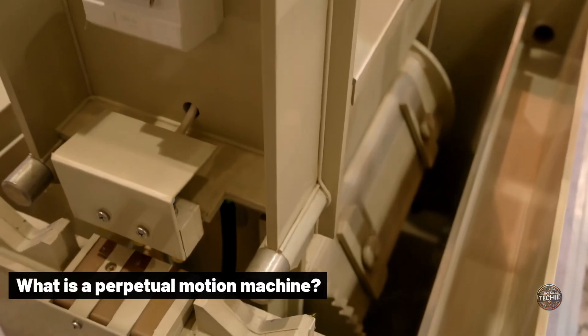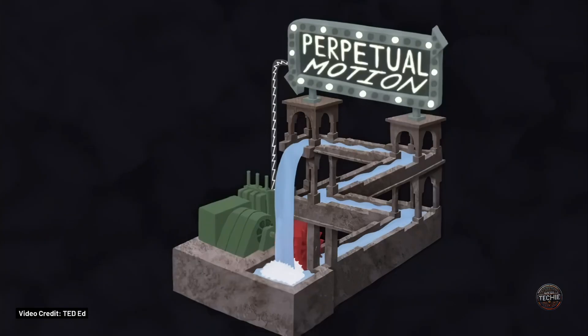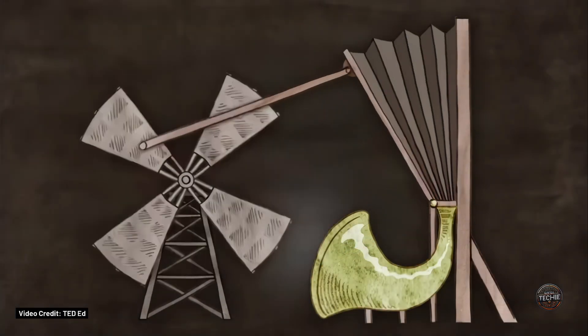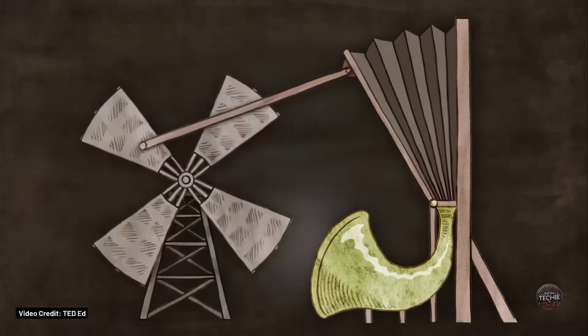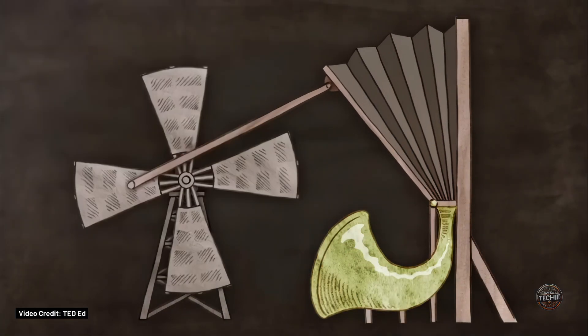First, let's see what is a perpetual motion machine. Perpetual motion machines are devices that, once started, could theoretically run forever without the need for any additional energy.